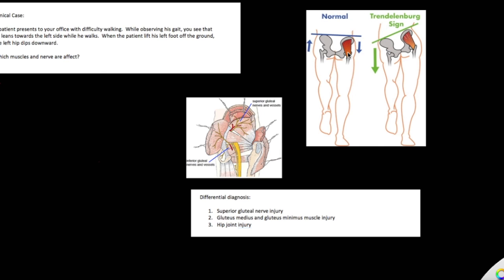The muscles here — there are two muscles. They are called the gluteus medius and gluteus minimus. They are innervated by the superior gluteal nerve. So if there's injury to the superior gluteal nerve, it gives the same clinical presentation as injury to the gluteus medius or gluteus minimus. In this case, the patient would probably have an injury to the superior gluteal nerve, which causes weakness to the gluteus medius and gluteus minimus, leading to the waddling gait seen in this patient. This sign is called the Trendelenburg sign.